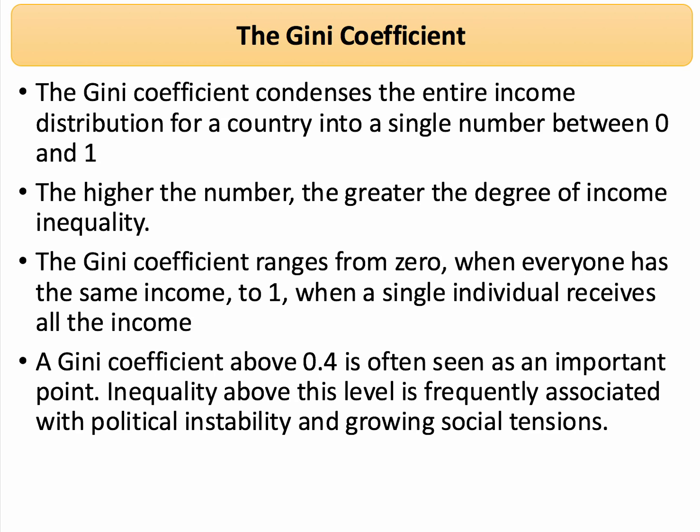What the Gini coefficient does for us is condense the entire income distribution for a nation into a number between 0 and 1, or between 0 and 100 if expressed slightly differently. The Gini coefficient is undoubtedly the most widely used measure of income inequality. The lower the value, the more equally household income is distributed; the higher the number, the greater the degree of income inequality. So it ranges from 0 to 1, or 0 to 100.